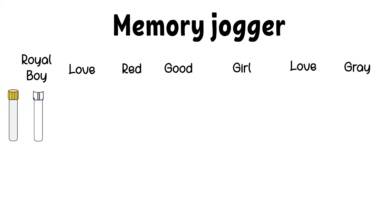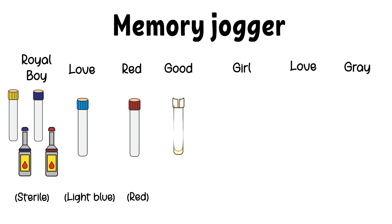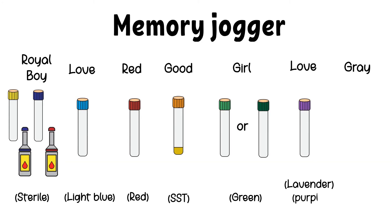So, royal is the royal blue top tubes, boy is blood culture bottle, love stands for light blue top, red is the red top, good is the gold top tubes, girl is the green top tube, the second love is for lavender top tube, and gray is just the gray top tube.